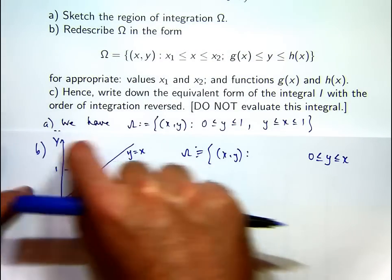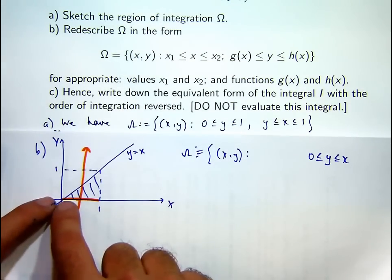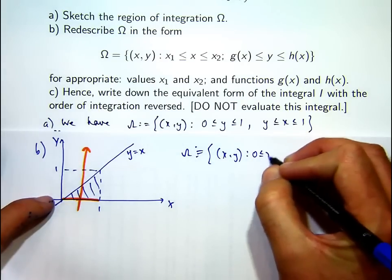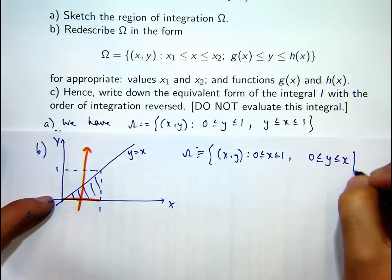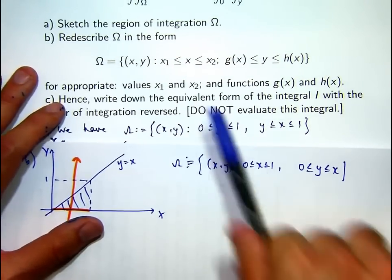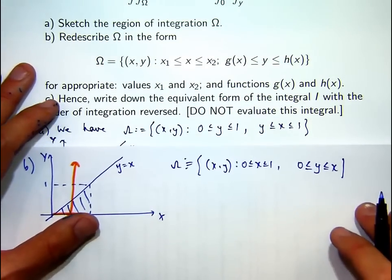And if I move the orange line from side to side, I want to move it between x equals 0 and x equals 1. So that, then, are your two bounds on the x variable.